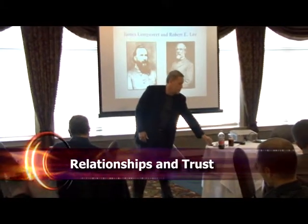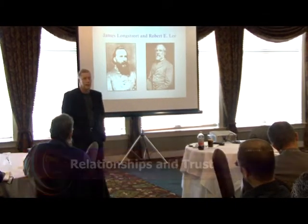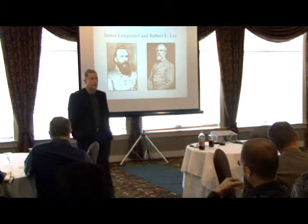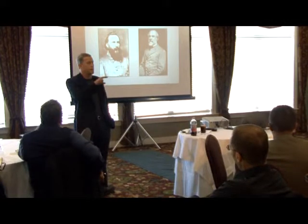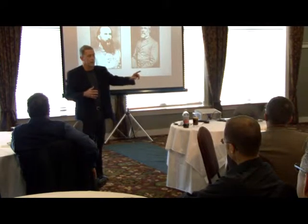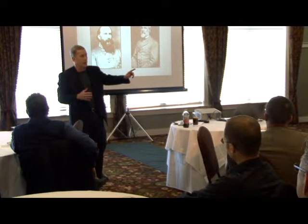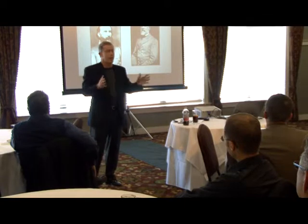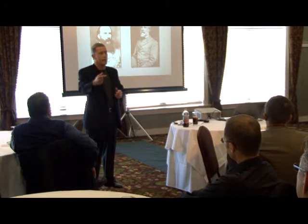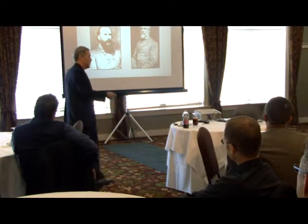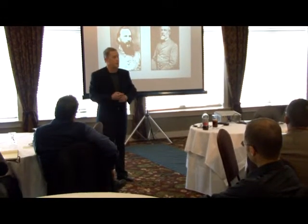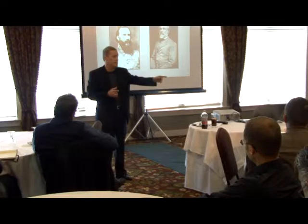This is General Robert E. Lee on the right hand side there. He was the commanding general of the Army of Northern Virginia, and the gentleman on his left is James Longstreet, who was at the time of Gettysburg Lee's primary subordinate and most trusted lieutenant. Whatever else you might say about Lee, I would give him credit for behaving in a way that made it clear to at least one person — Longstreet — that they could say whatever they wanted to him and give him whatever feedback they thought he needed.